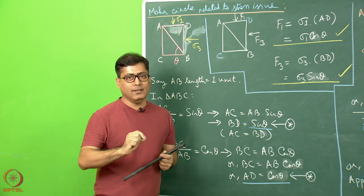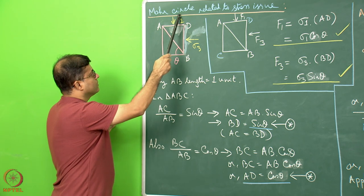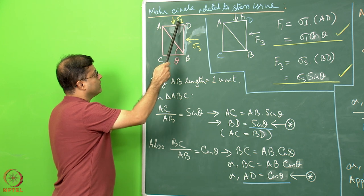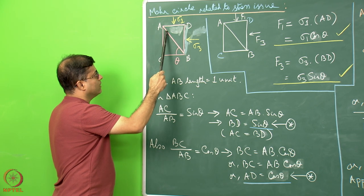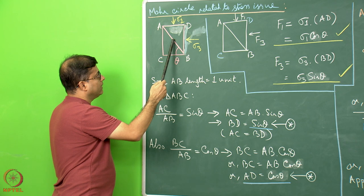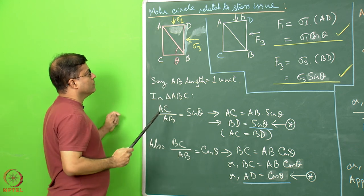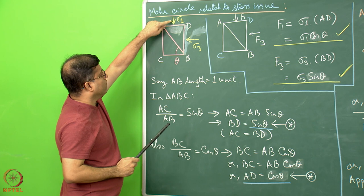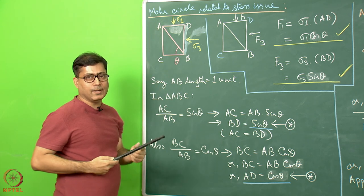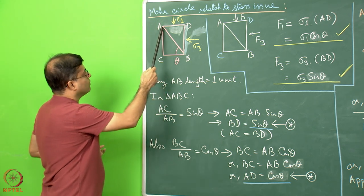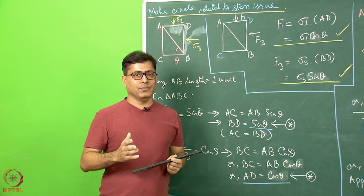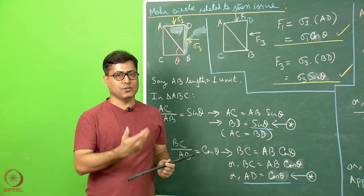On the AB line, this stress — which I will translate as force and resolve — I will see how much of F1's component is the normal force and shear force. Similarly, we will see sigma 3 stress coming and hitting the AB line: how much is the normal force and shear force? So the normal force components and shear force components from sigma 1 and sigma 3 on AB will be picked up. Our aim is to find how much is the normal stress and the shear stress acting on the AB line. Try to understand what is given in Mohr circle and what is to be found out.